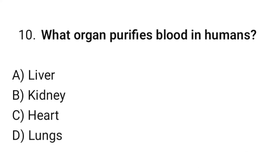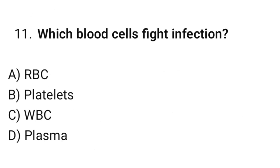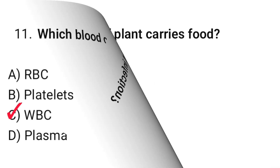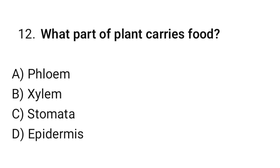Question number 10: What organ purifies blood in humans? The correct option is B — Kidney. Question number 11: Which blood cells fight infection? The correct option is C — WBC. Question number 12: What part of a plant carries food? The correct option is A — Phloem.